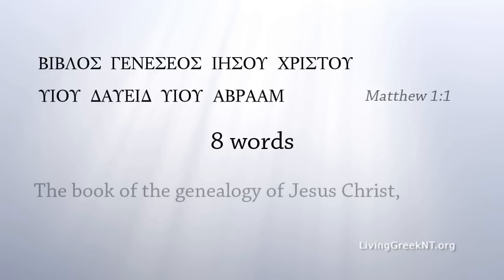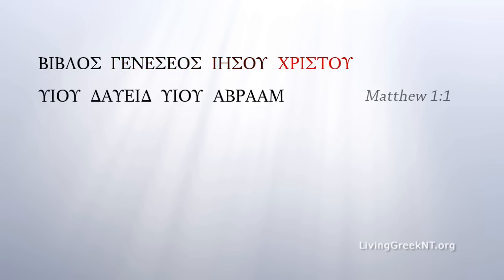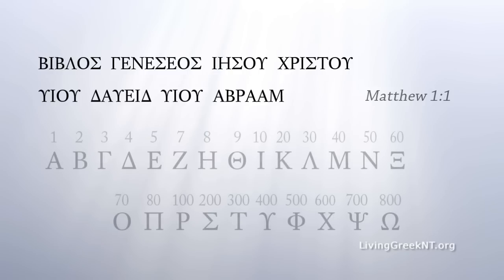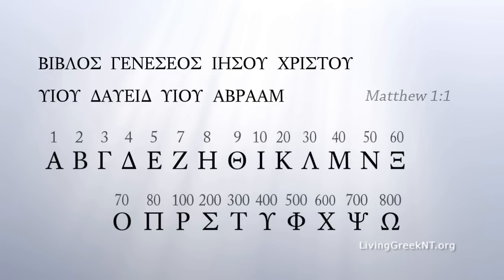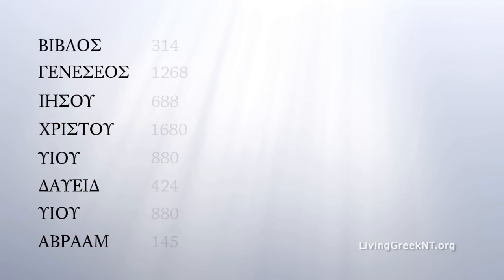Matthew 1:1 reads: 'The book of the genealogy of Jesus Christ, the son of David, the son of Abraham.' In Greek: Biblos Genesios, Jesu Christu, Viu David, Viu Avraham. In Greek, as in Hebrew, every letter of the alphabet has a numeric value. Here is the value of each word in Matthew 1:1.